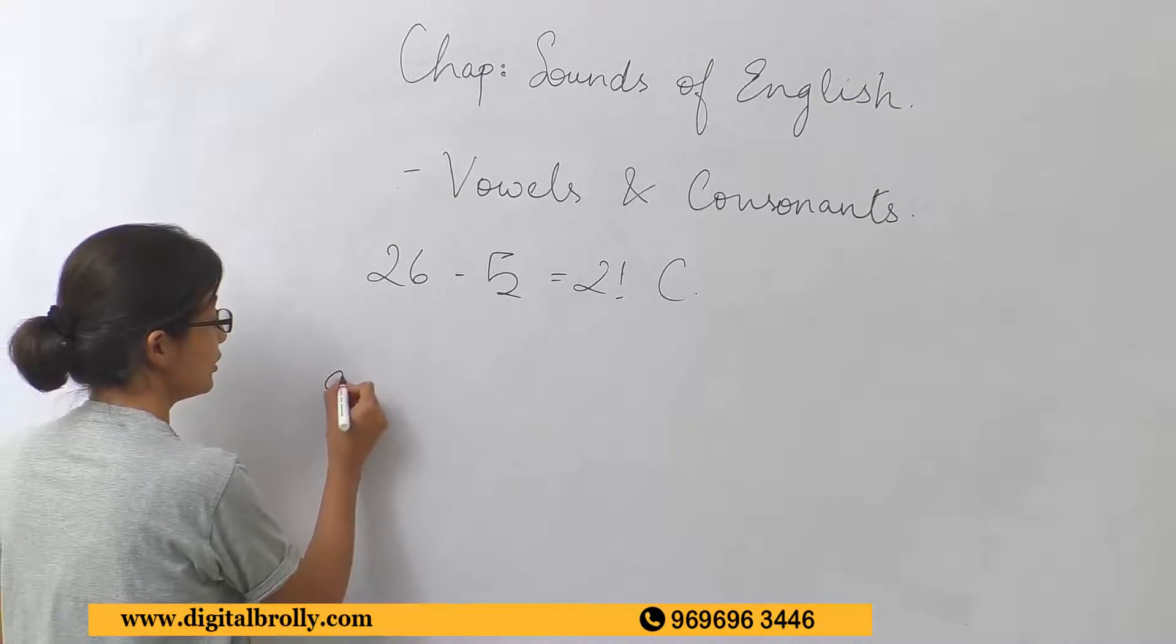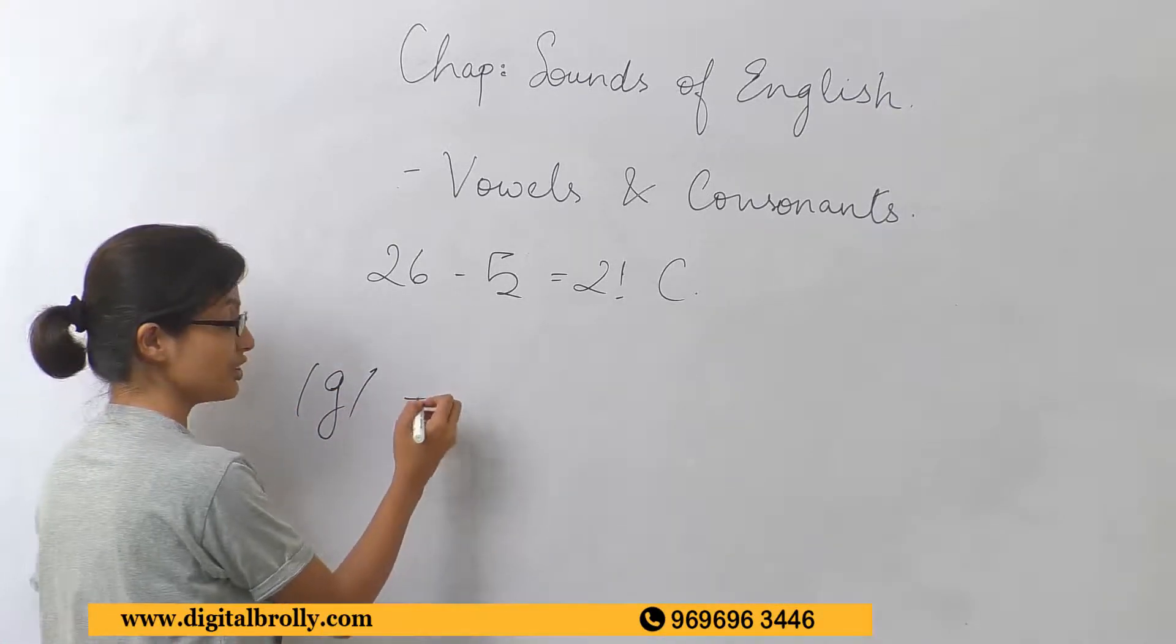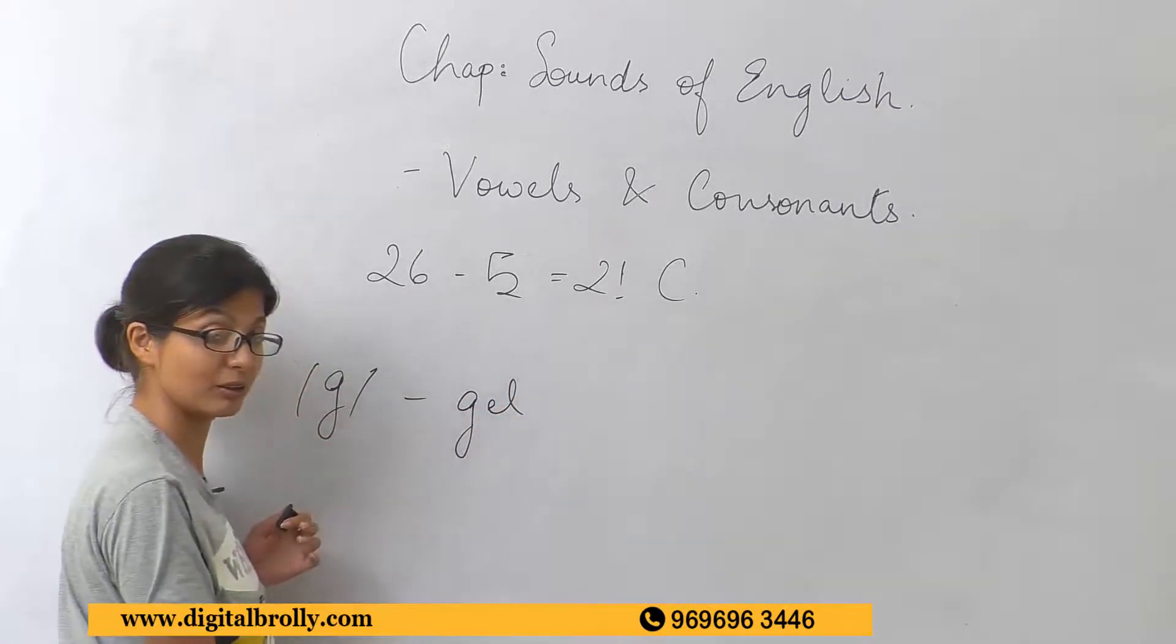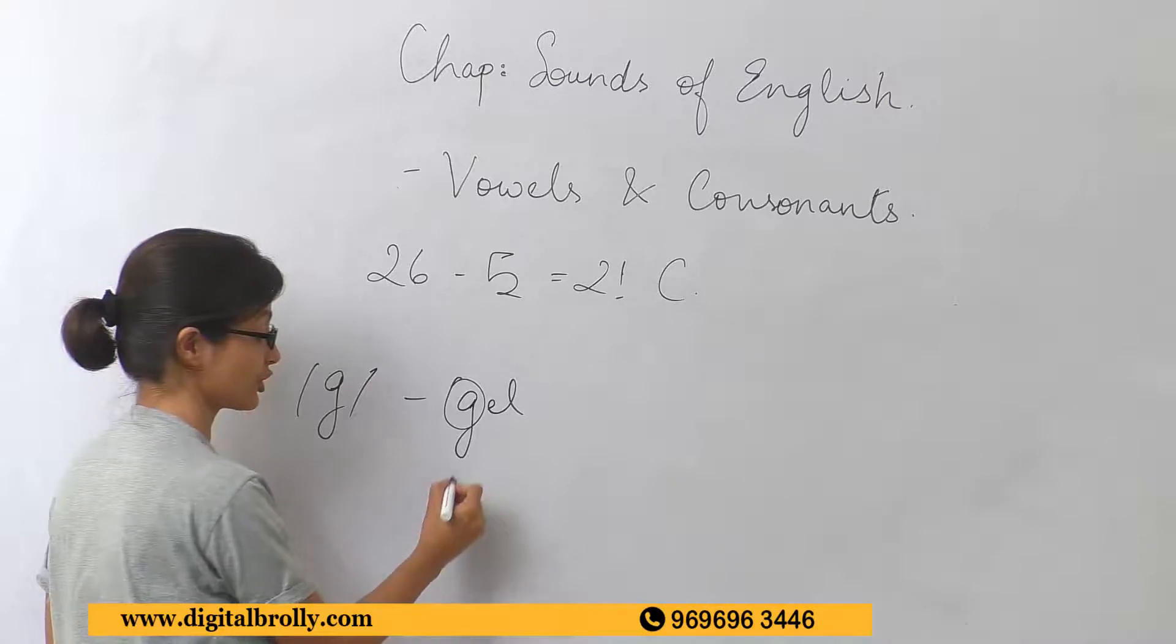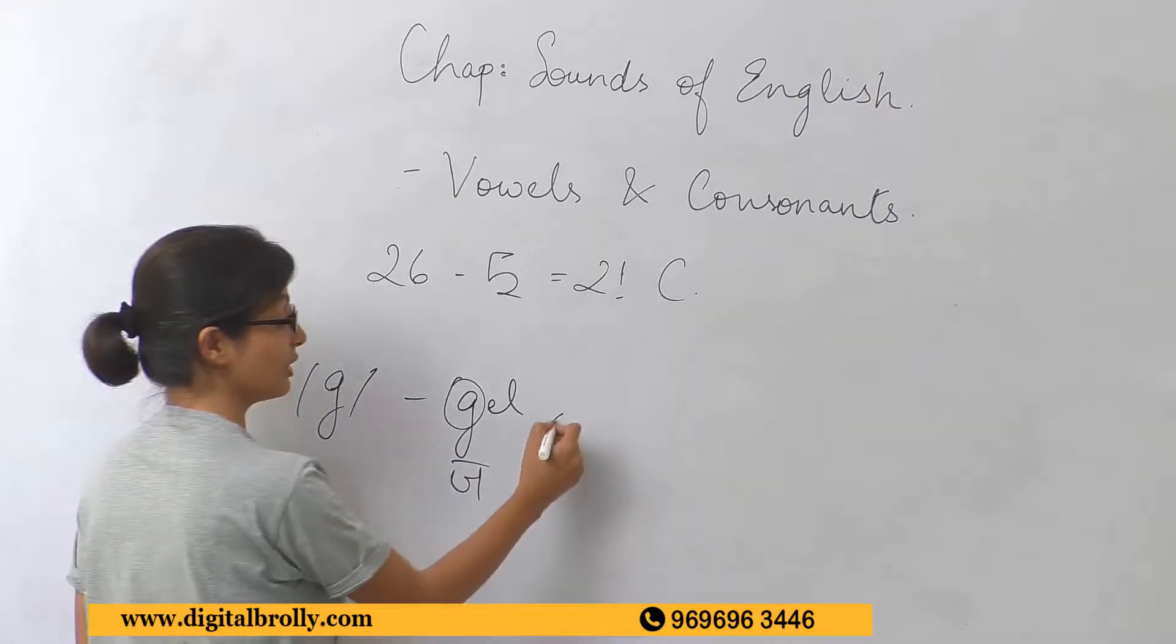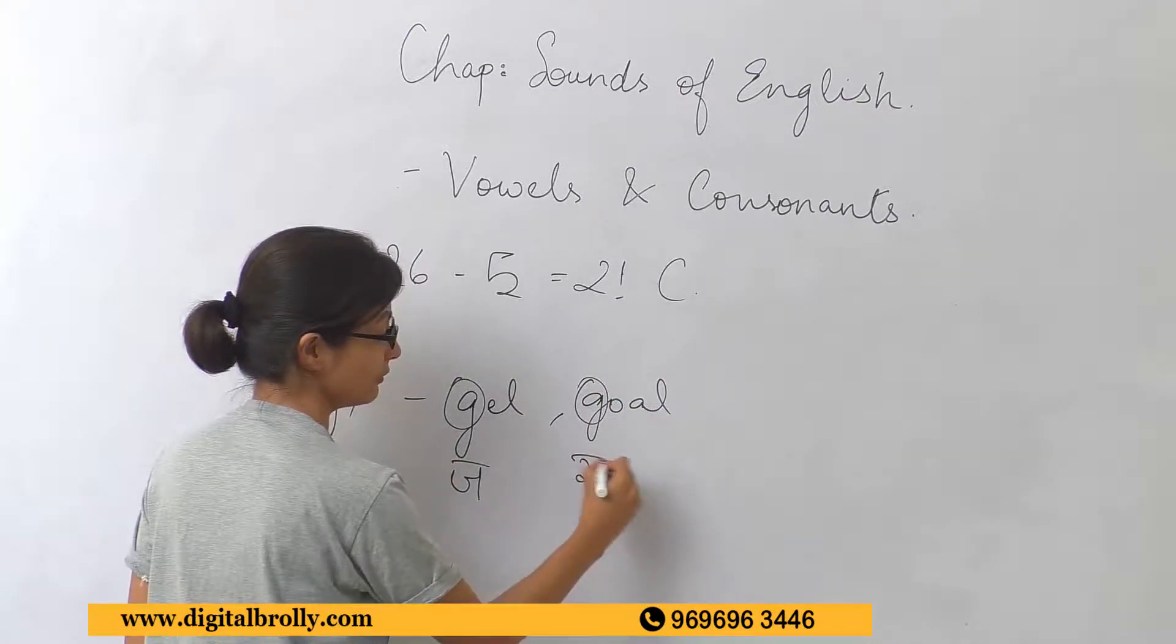For example, G. With G, you can have a word like gel which gives you a pronunciation of J, but you can also have a word like goal which gives you a pronunciation of G.